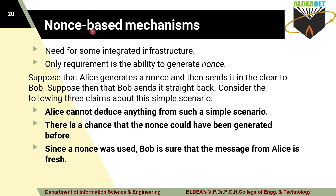These are some problems that arise in the nonce-based mechanism. The nonce-based mechanism is simple: you randomly generate numbers using an algorithm known to both Alice and Bob. Alice generates a nonce — each nonce is generated only once, no repetition. Alice adds the nonce to the message and sends it to Bob. Bob generates its own nonce and sends it as acknowledgement, proving these are fresh messages and the two parties are communicating.